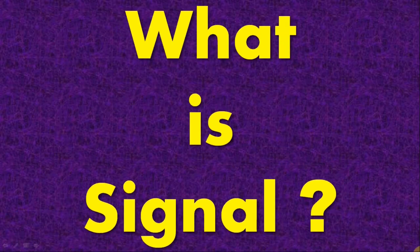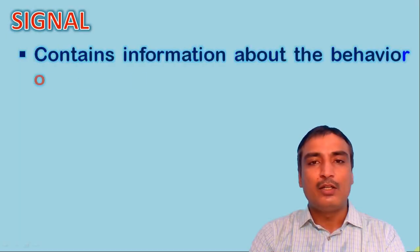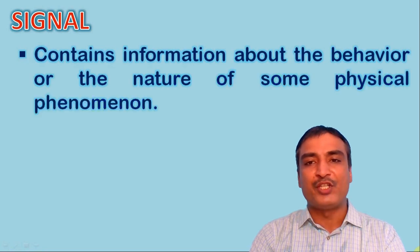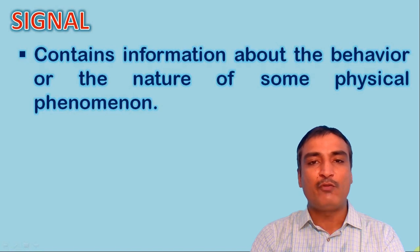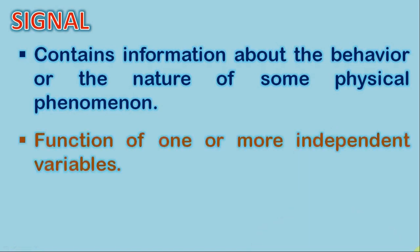Now, the first question arises: what is a signal? The signal is one which contains information about the behavior or the nature of some physical phenomena. Mathematically, it can be represented as the function of one or more independent variables.